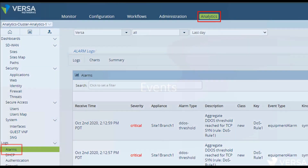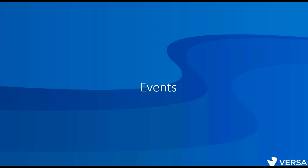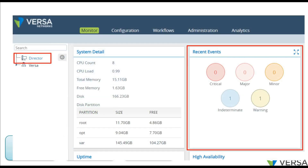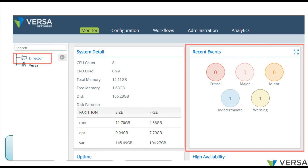Next, let's go to events. As soon as your alarms leave analytics and travel to the director, they become events. The director can also generate certain events on its own — for example, there might be events about the director running out of space or out of memory. In the monitor screen, if you click on the director, you will see all the events that the director generated itself.